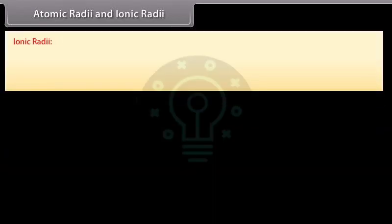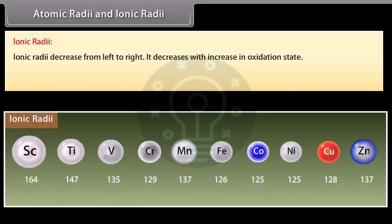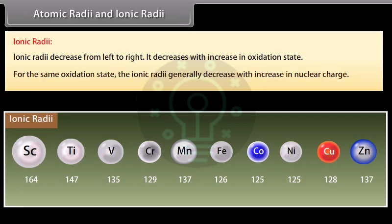Ionic radii decrease from left to right. It decreases with increase in oxidation state. For the same oxidation state, ionic radii generally decrease with increase in nuclear charge.